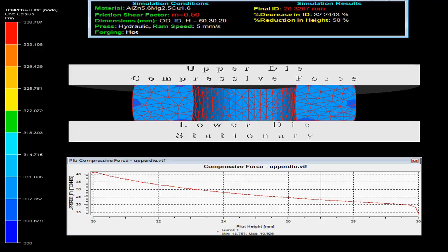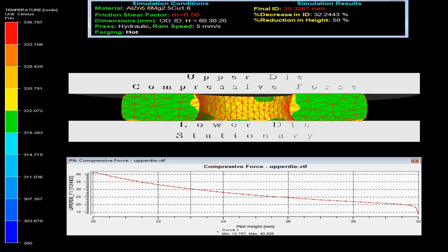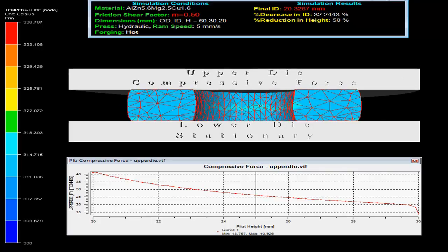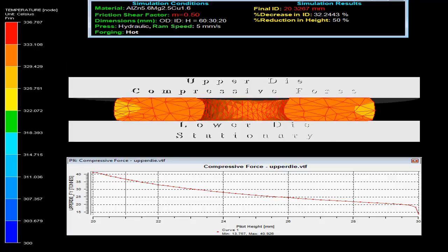On the top right side simulation results show the final inner diameter as 20.33 mm with decreased inner diameter by 32.24% on 50% reduction in height at the bottom.